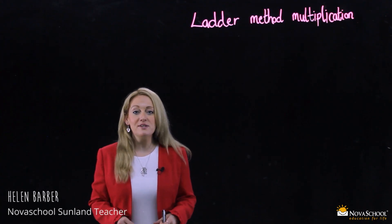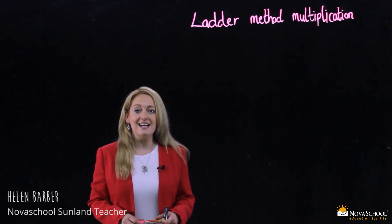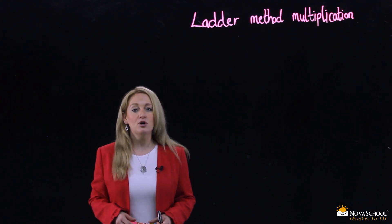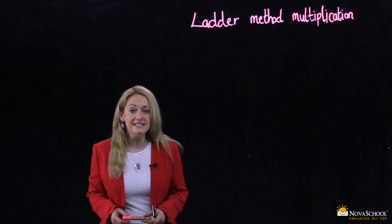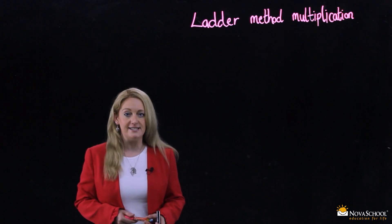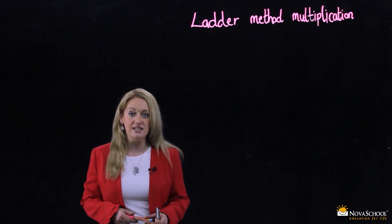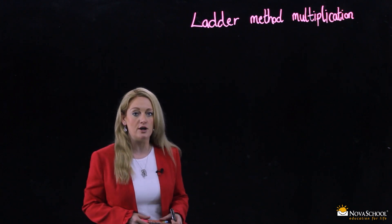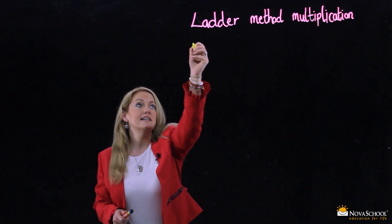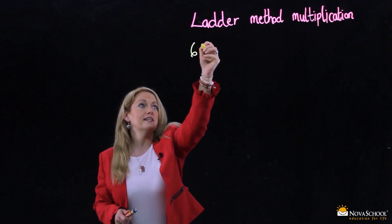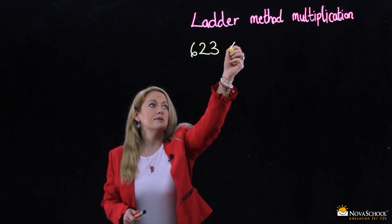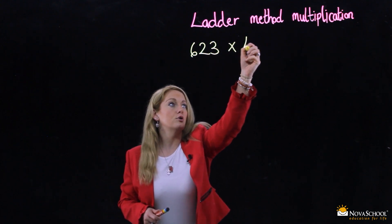Hello everybody, today we're going to look at ladder method multiplication. We're going to take three digits and we're going to multiply them by one digit. Let's write out the question and then we can follow the method. So we have 623 multiplied by 4.